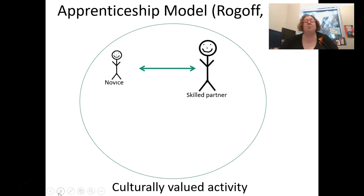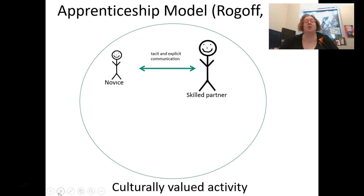There's two-way communication happening between them, and this communication is both tacit and explicit. Tacit communication are the types of communication that are not said but understood — the way I model my behavior, the environment around me, and nonverbal cues. Explicit communication, on the other hand, is when I tell you exactly what I want or exactly what I'm doing — a set of clear directions or instructions.